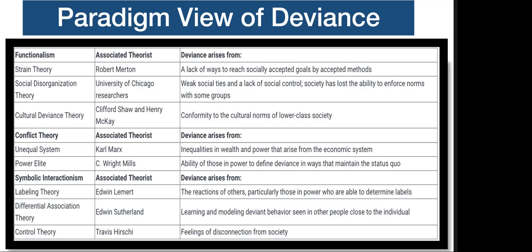Conflict theory looks at deviance arising from macro-level inequalities. Functionalism examines how deviance functions within society — strain, disorganization, and why deviance exists. Conflict theory, as it always does, takes a macro perspective. Marx talks about unequal systems — inequalities in wealth and power arising from the economic system creating deviance. C. Wright Mills' power elite theory argues that those in power define deviance in ways that maintain the status quo: if you write the law, how do you get busted for it?